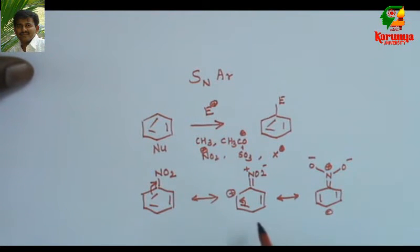So if there is a leaving group attached to this position, then a nucleophile can attack this ortho and para position. That will be aromatic nucleophilic substitution.